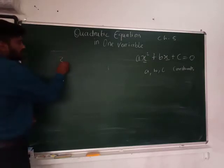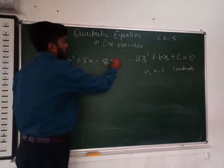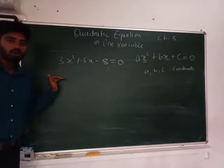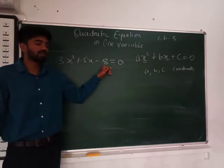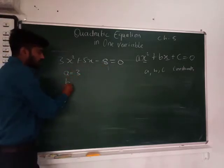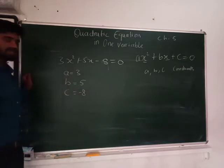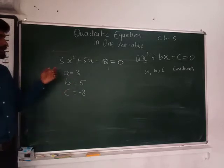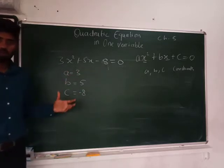For example, 3x² + 5x − 8 = 0 is a quadratic equation. Here, a is 3, b is 5, and c is minus 8. So 3 takes the place of a, 5 takes the place of b, and minus 8 takes the place of c.